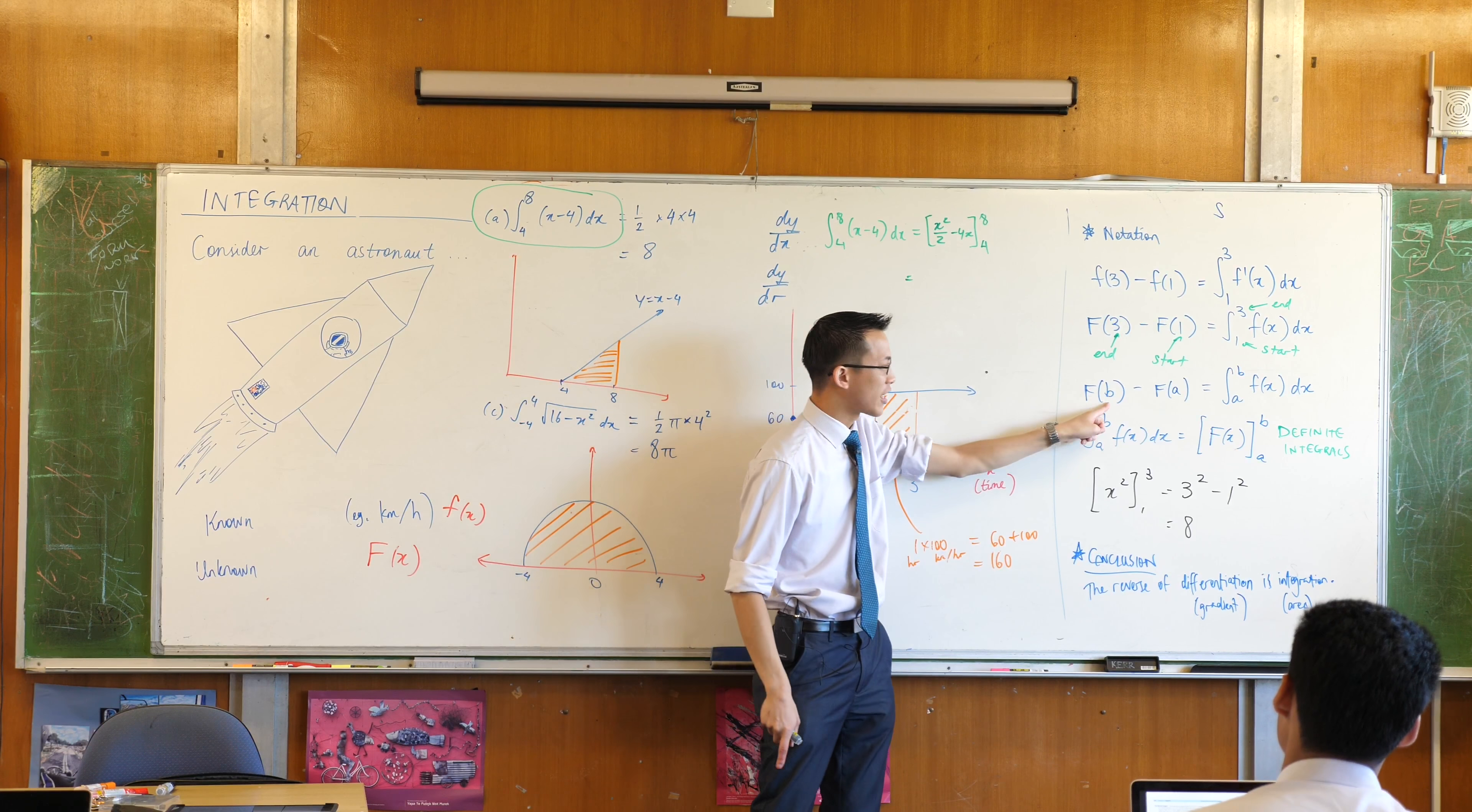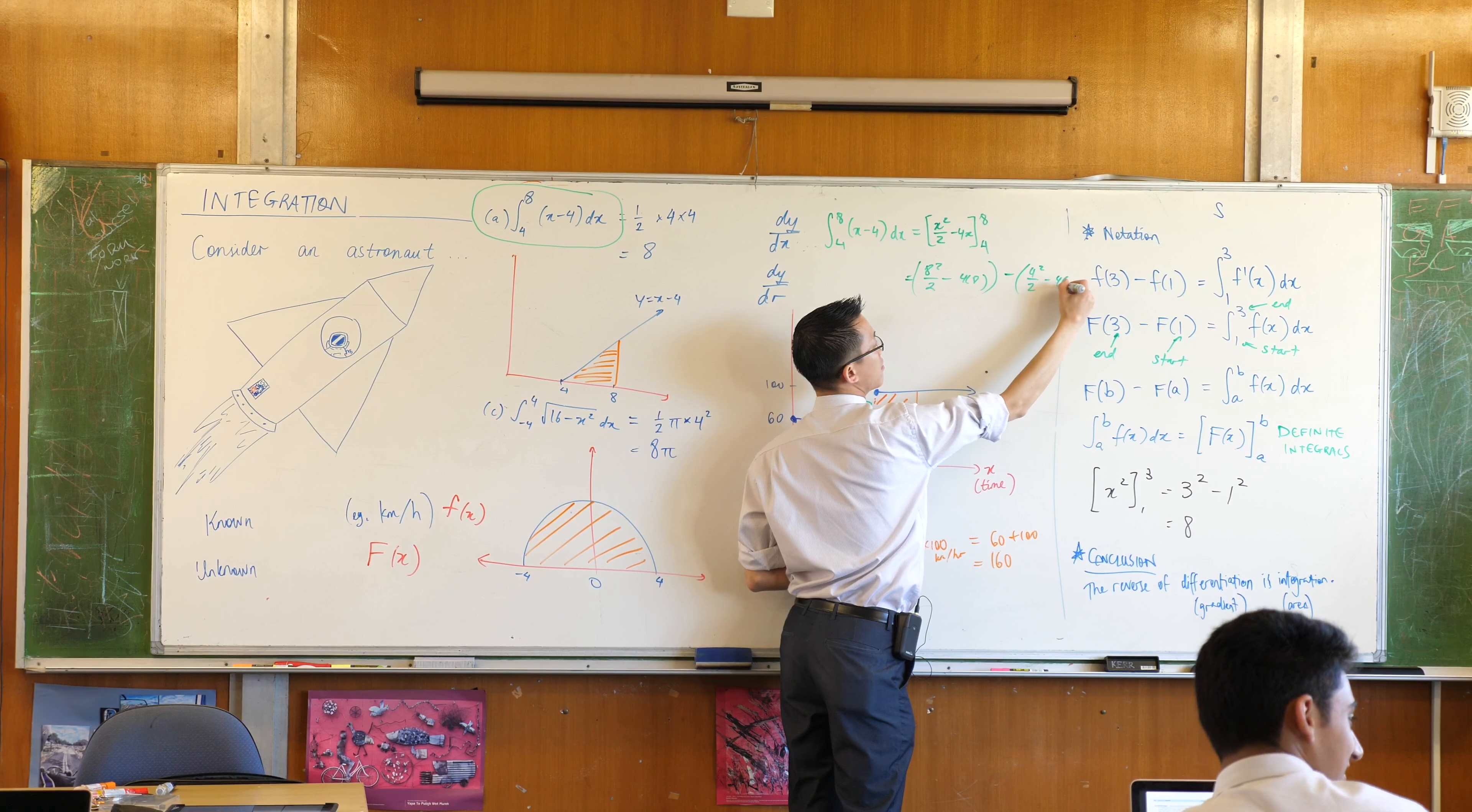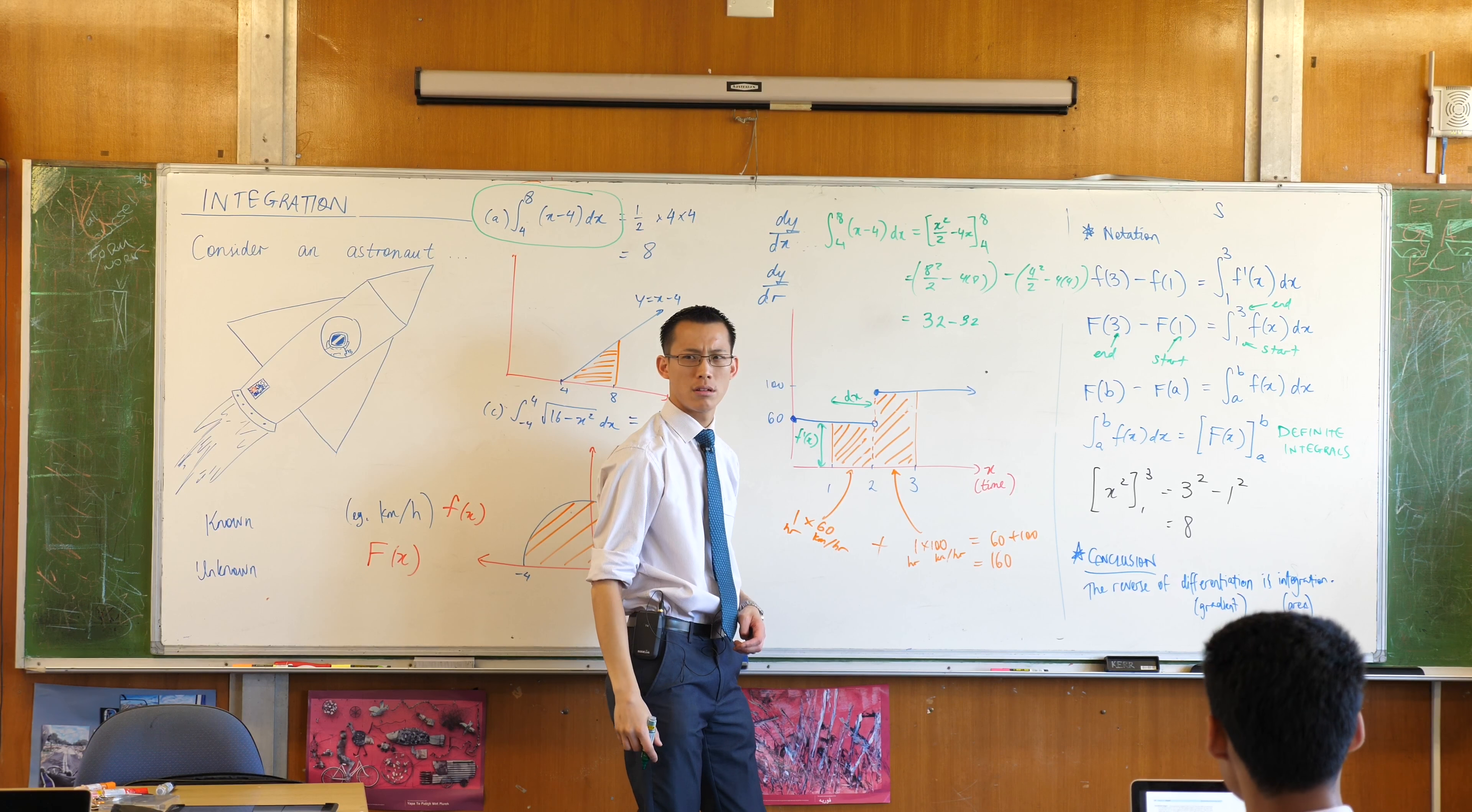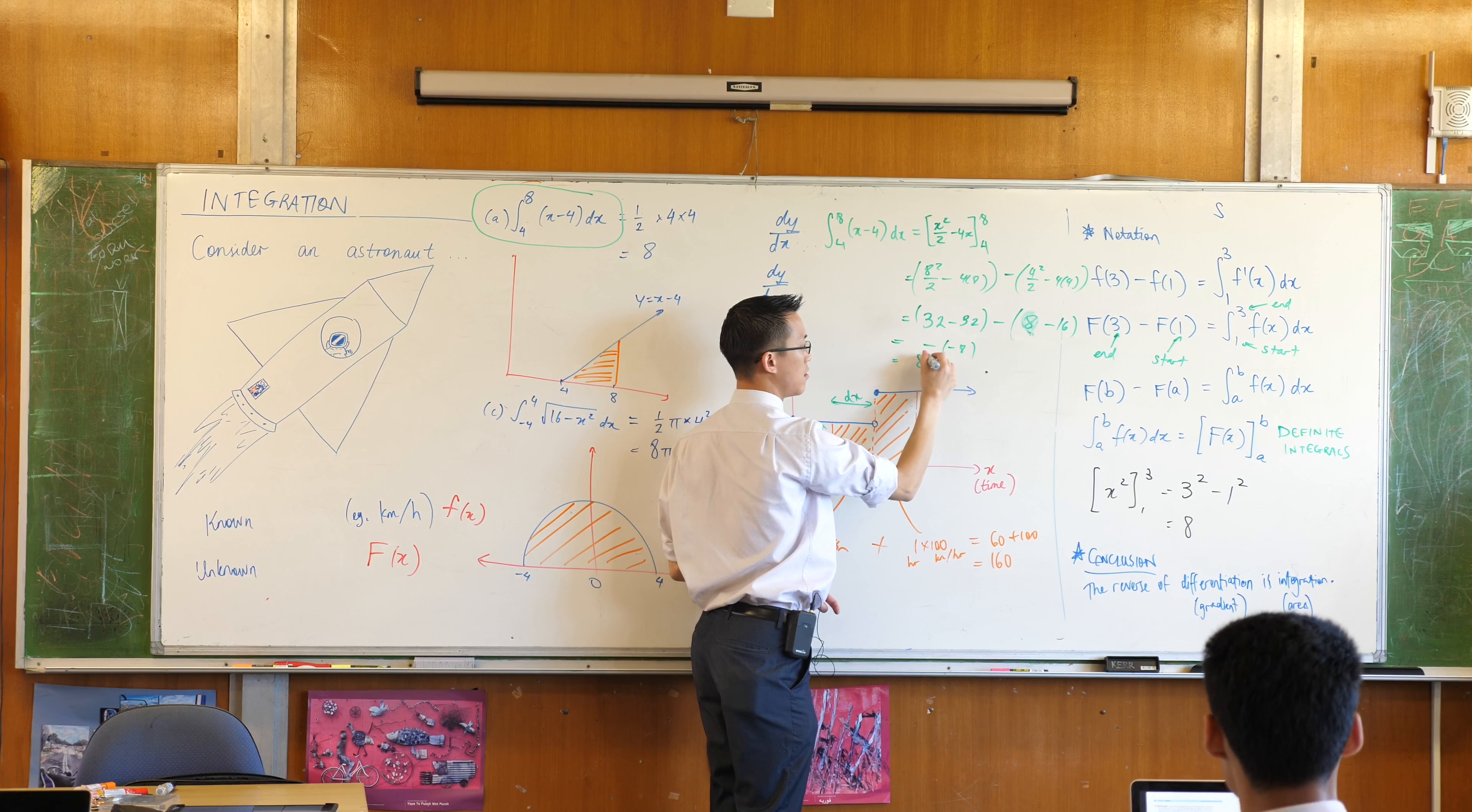What does this mean again? It means chucking your end value, chucking your beginning value. What happens when I put in 8? I get 8 squared on 2, take away 4 lots of 8. What happens at 4? 4 squared on 2, take away 4 lots of 4. Just help me crunch the numbers here. 64 on 2, 32, take away 32. That's interesting. We'll come back to that in a second. Take away what? 16 on 2 is 8. 4 times 4 is 16. That's 0. That is negative 8, which sure enough is 8.